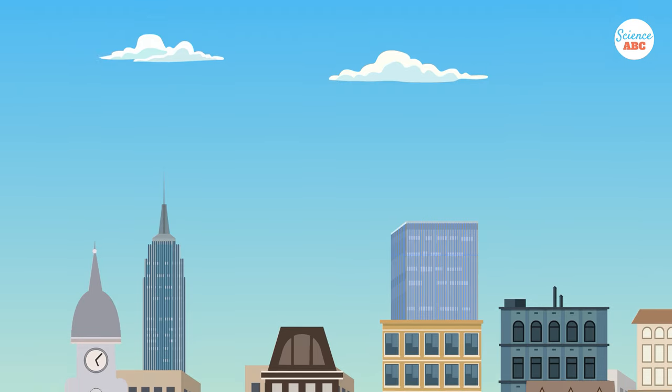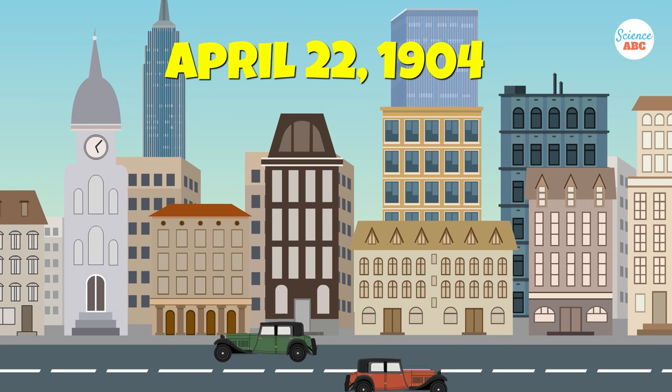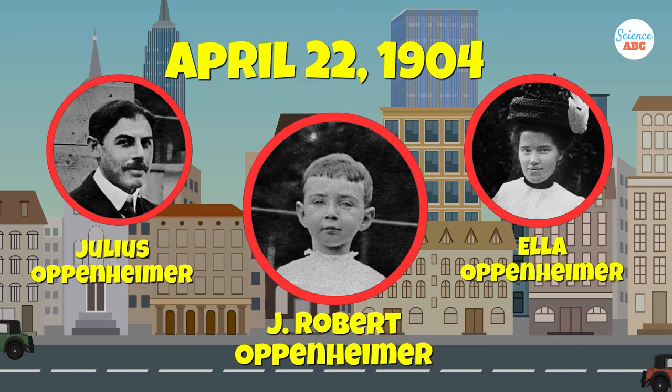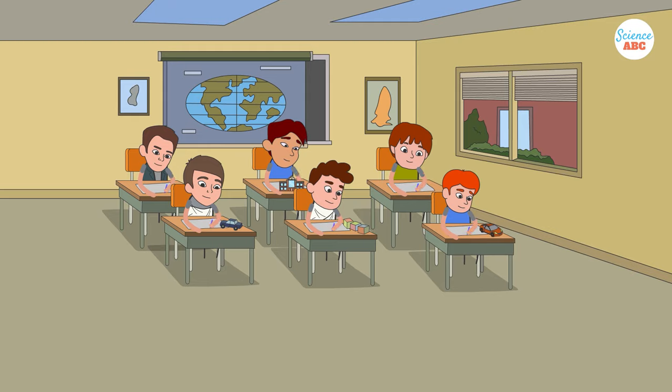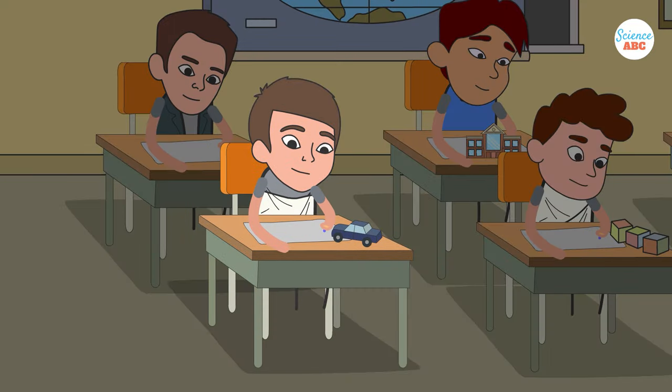Oppenheimer was born on April 22, 1904, to wealthy Jewish parents Julius and Ellen Oppenheimer in New York. He studied at the Ethical Culture Society. Growing up, Oppenheimer was a precocious child with a broad range of interests.